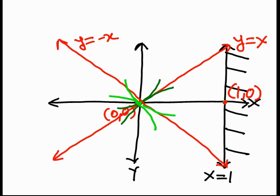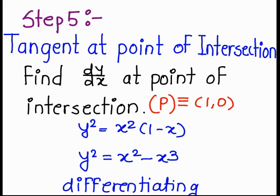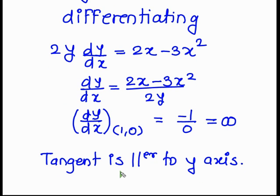In step number 5, we need to find tangent at 1, 0 and we get the tangent at 1, 0 is parallel to x-axis.